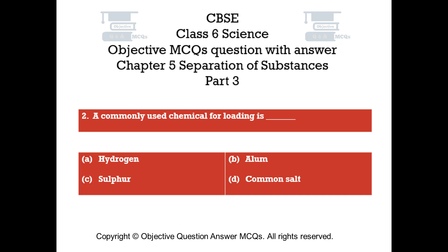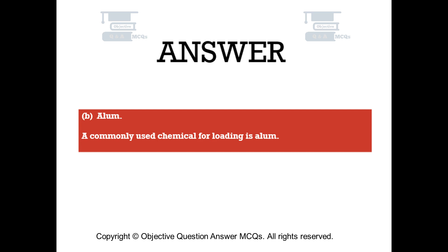Question number 2. A commonly used chemical for loading is. Option A: Hydrogen. Option B: Alum. Option C: Sulfur. Option D: Common Salt. The right answer is Option B — Alum. A commonly used chemical for loading is alum.